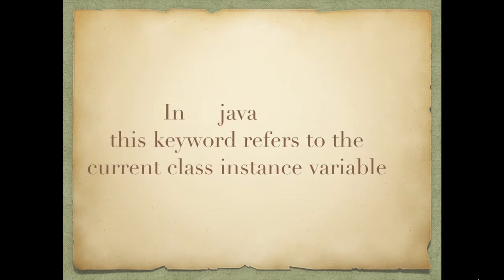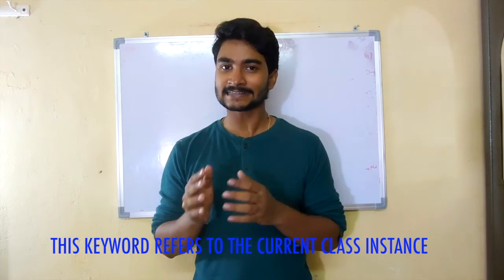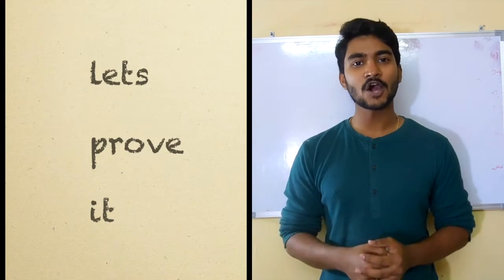My name is Avilash and thanks for tuning in to my channel Selenium Express. Before I give you the answers, let's understand this statement: the 'this' keyword in Java returns the current class instance — meaning the current class object. If you can understand this, you can answer all three questions. Let's go ahead and prove it.